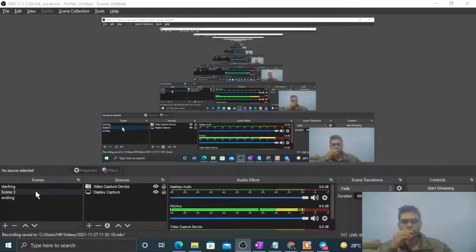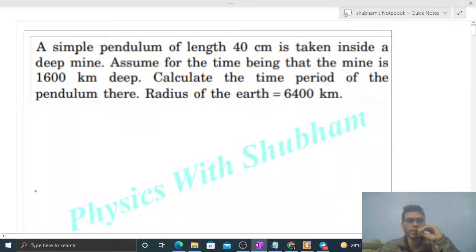OK, hi everyone. So today let's discuss this interesting problem. It says a simple pendulum of length 40 centimeters is taken inside a deep mine. Assume for our time being that the mine is 1600 kilometers deep. Calculate the time period of the pendulum there. Radius of Earth is 6400 kilometers.